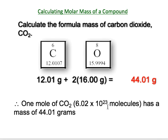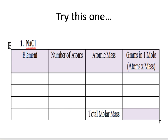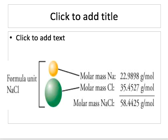We often work with compounds, not just individual elements or atoms. Try the sodium chloride NaCl example on your paper — you can pause the video. There's only one sodium and one chlorine. The molar mass of sodium is 22.9898 and the molar mass of chlorine is 35.4527. Adding them together, one mole of NaCl formula units has a molar mass of 58.44 grams per mole. It's important to go out at least two decimal places in these calculations.